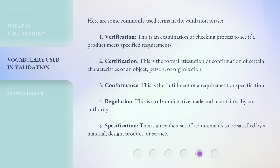4. Regulation: This is a rule or directive made and maintained by an authority. 5. Specification: This is an explicit set of requirements to be satisfied by a material, design, product, or service.